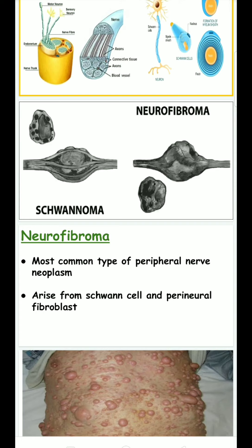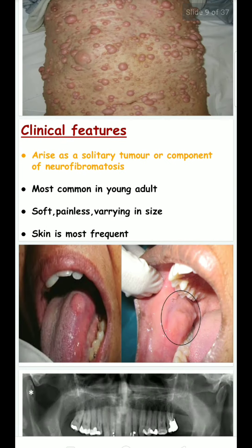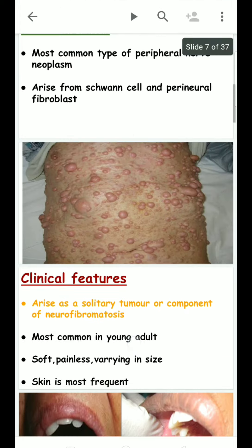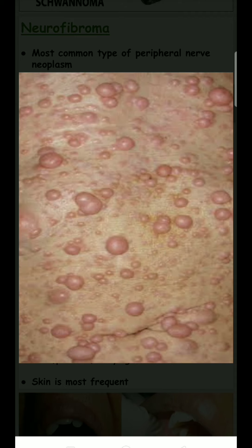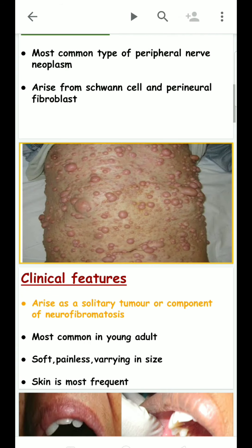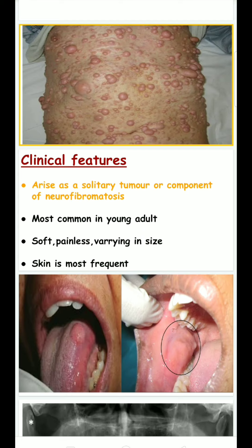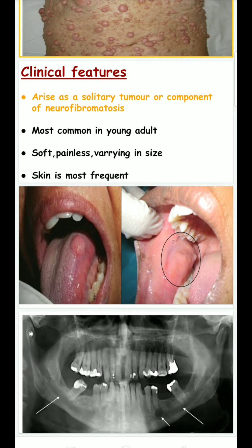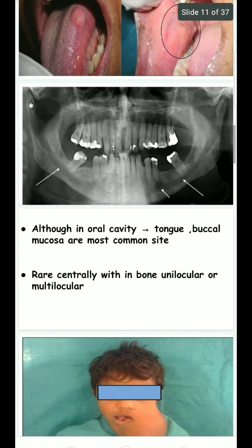Clinically, it arises as a solitary tumor or as a component of neurofibromatosis, most common in young adults. It is soft and painless, varying in size. Skin is the most frequent site, although in the oral cavity the tongue and buccal mucosa are the most common sites. It is rare centrally within bone.